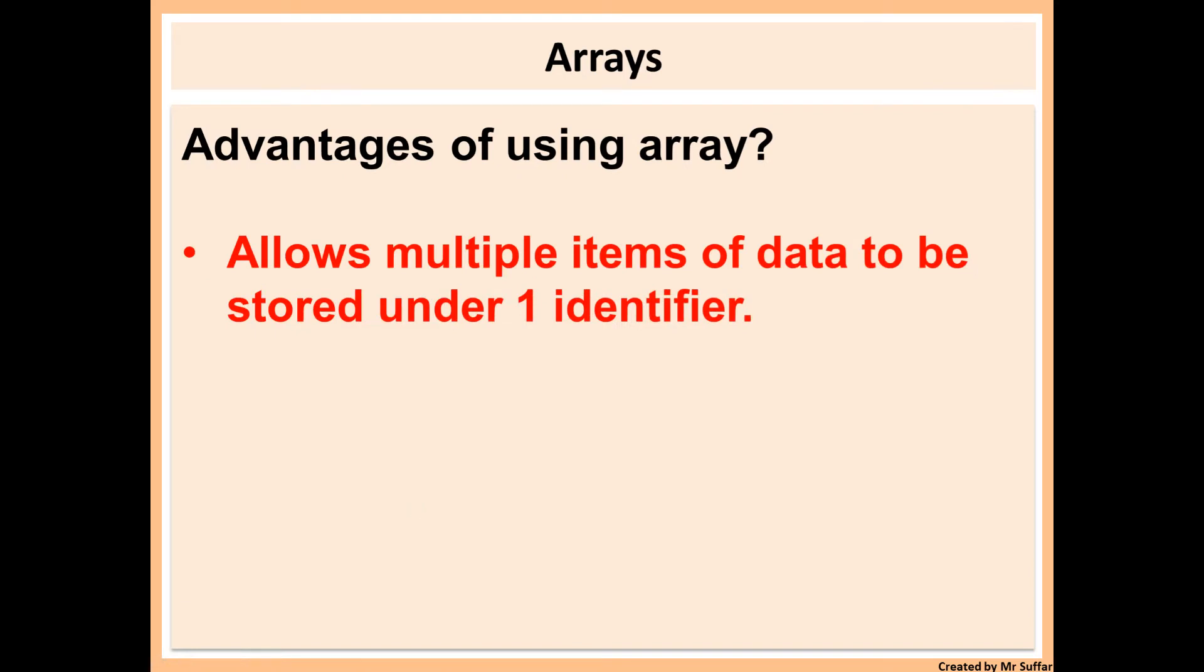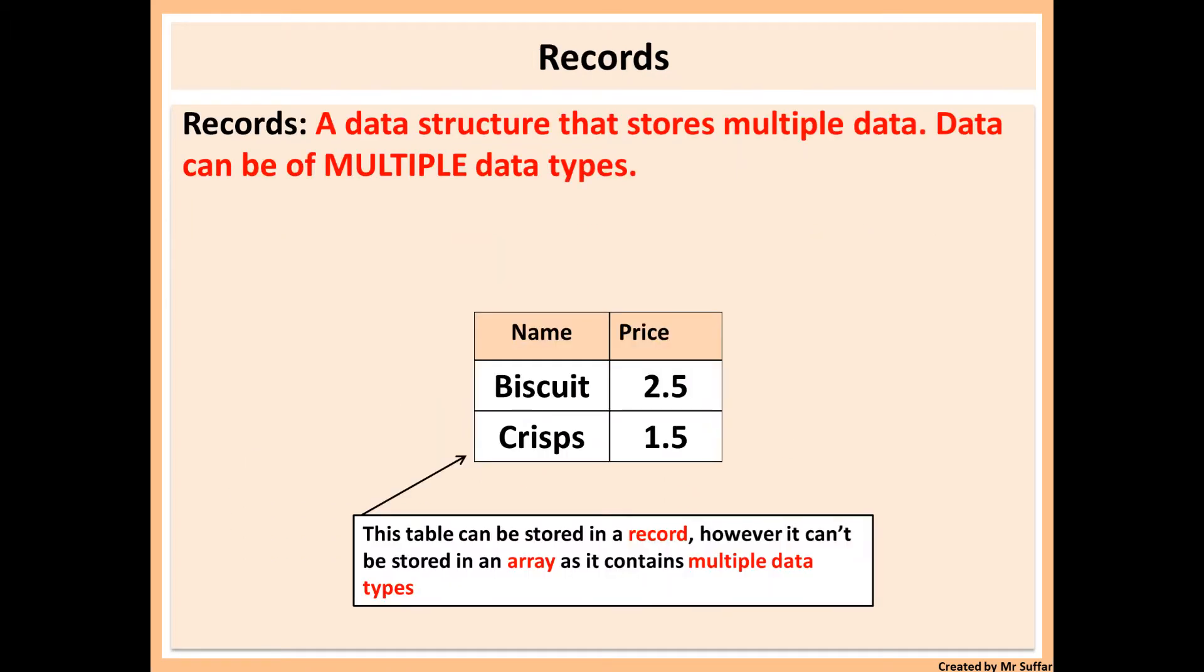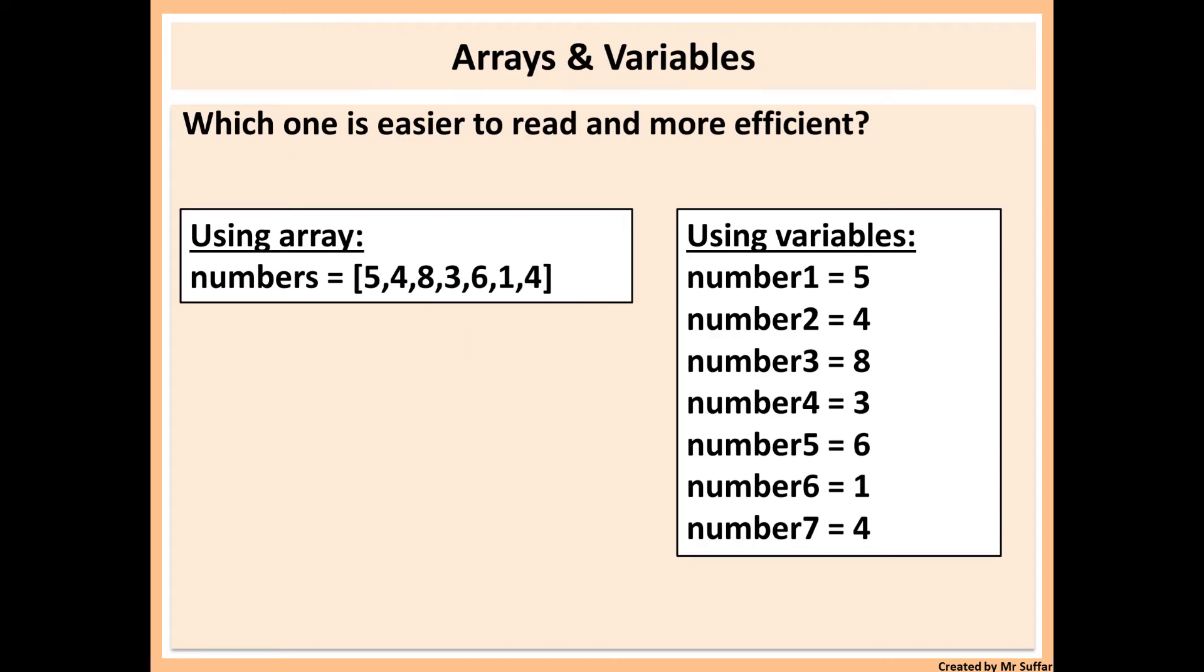In this example, rather than having seven different variables, we can store everything under one array. This will reduce the number of variables needed.